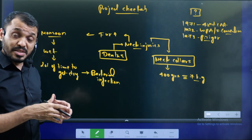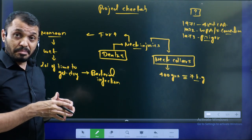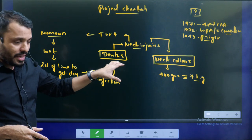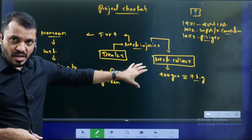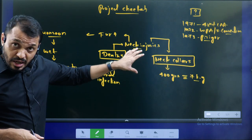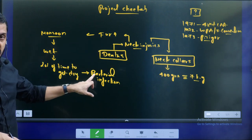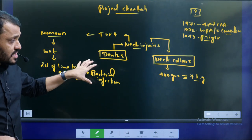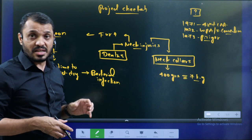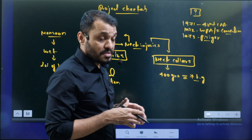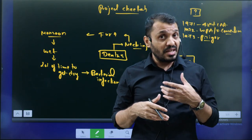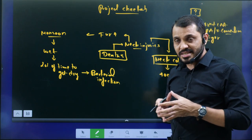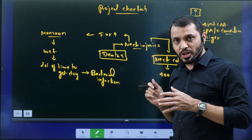Cheetah athleticism is very high compared to lion and tiger, so these are the issues. Mainly the neck collar issue — around this neck collar, bacterial infection is becoming and spreading. Because of this, the cheetahs are getting bacterial infection very high and they are subjected to death. Now we are discussing this particular issue.